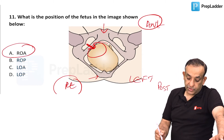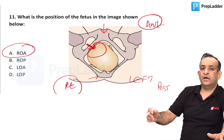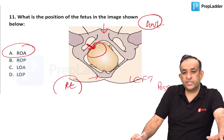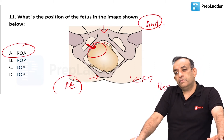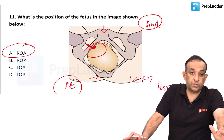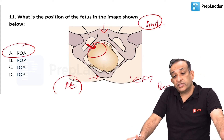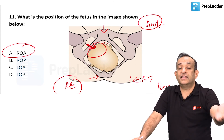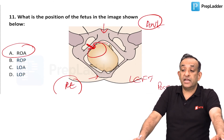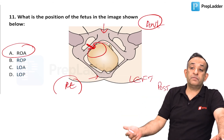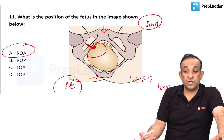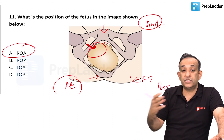There was a lot of discussion about what is the most common position. All heads are left occipital transverse to start with, but eventually they become left occipital anterior and then deliver. There was confusion because in the Indian setup, LOA is seen more often.